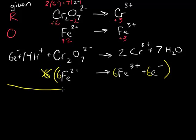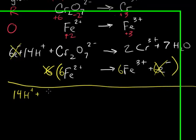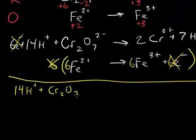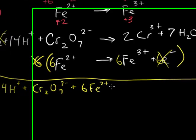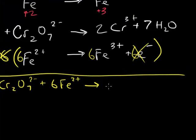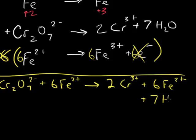Now we add the half reactions, cancel out electrons. So the electrons here cancel out 6 electrons and 6 electrons. We get 14 H plus, plus Cr2O7 2 minus, plus 6 Fe 2 plus, and this forms 2 Cr 3 plus, plus 6 Fe 3 plus, plus 7 H2O.